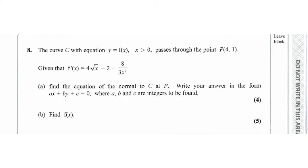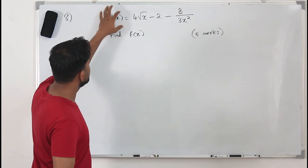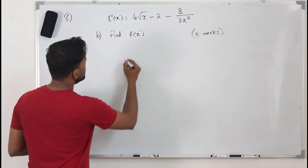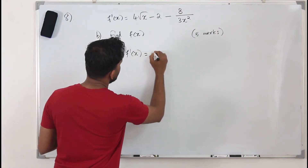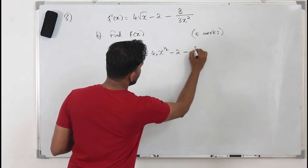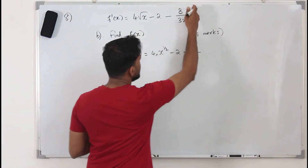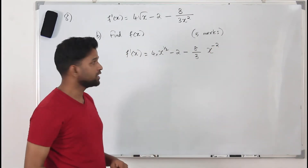Looking at part b, they want you to find f(x) — the derivative f'(x) is given and you need to find f(x). Basically, they're talking about integration, and if you integrate the function you will get 5 marks. So f'(x) written properly is: 4 times x to the power one-half, minus 2, minus 8 over 3 times x to the power negative 2.